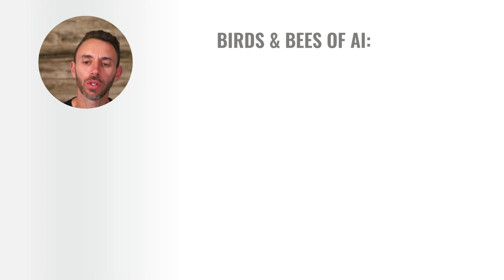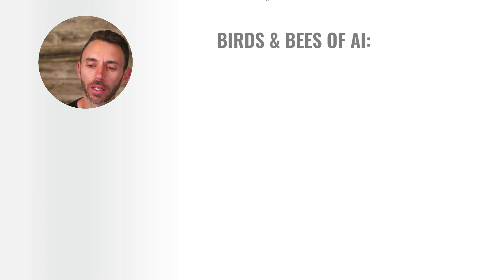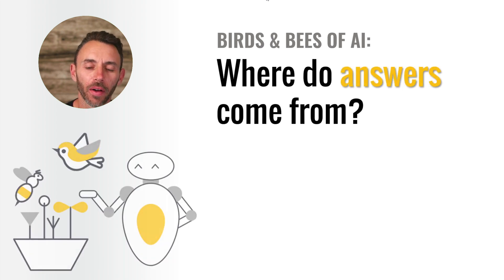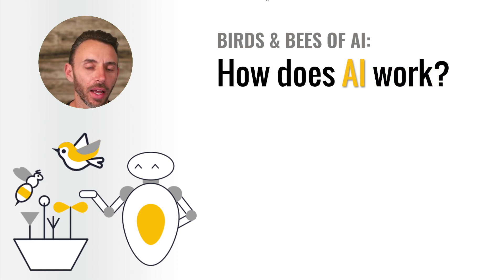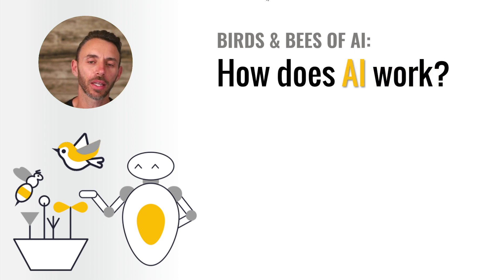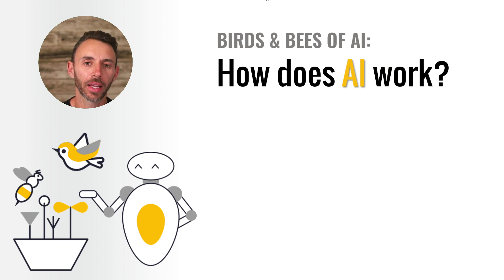With this lesson plan, you can tell your students that you're going to talk about the birds and bees of AI — where do answers come from, or in other words, how does AI work? This lesson is going to give your students an overview of how generative AI works and why and how it's different than services like Google.